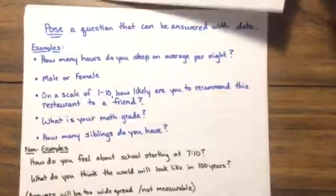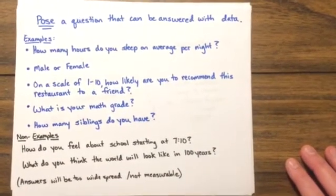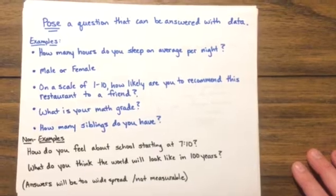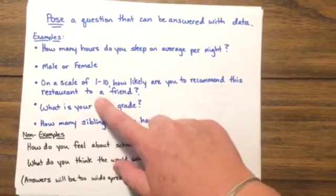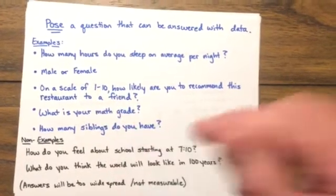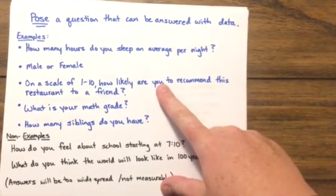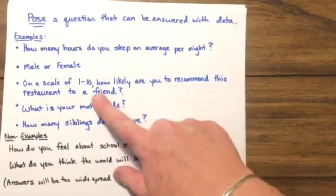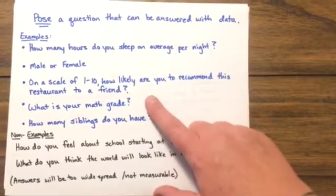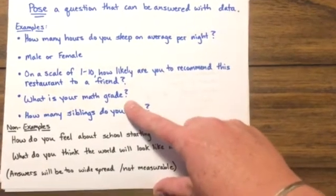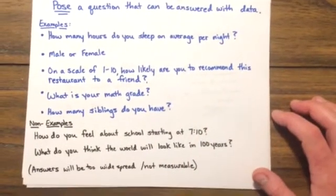Let's elaborate on those four for just a minute. The first one is to pose a question that can be answered with data. Some examples would be: how many hours do you sleep on average per night? Another might be male versus female. Another is something like on a scale of 1 to 10, how likely are you to recommend this restaurant to a friend? That allows a restaurant to categorize an opinion so they can gather data. What is your math grade and how many siblings do you have are other examples.